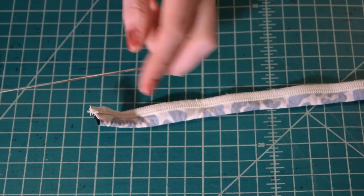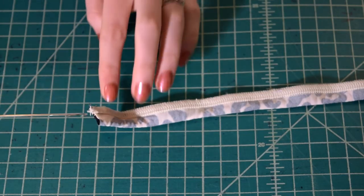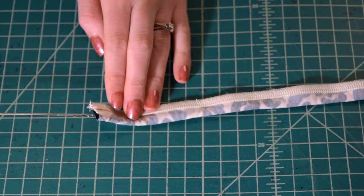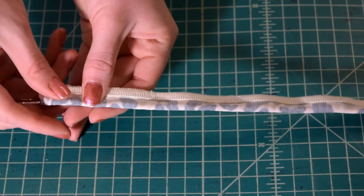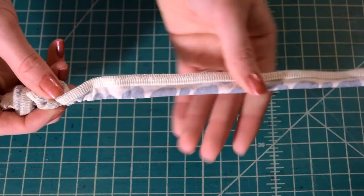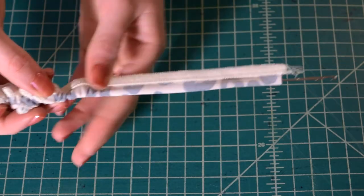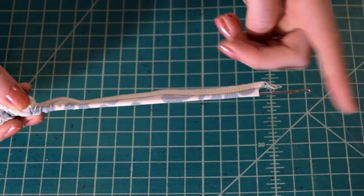So let's go ahead and do this. We're just going to put the loop turner in through one end of the fabric tube, and then scrunch the fabric up until the loop turner, the hook part of the loop turner, is coming out the other end.